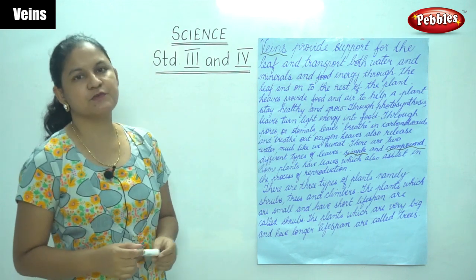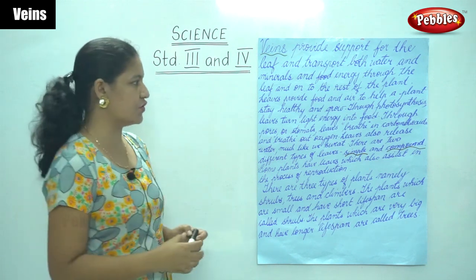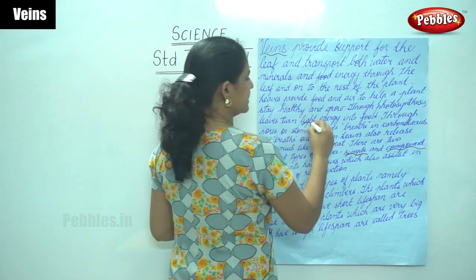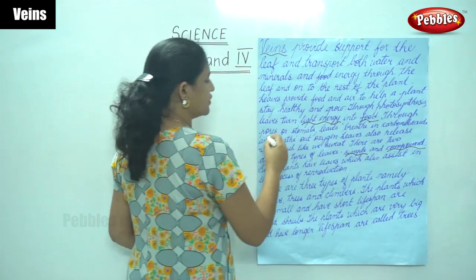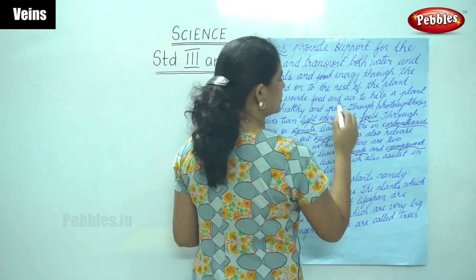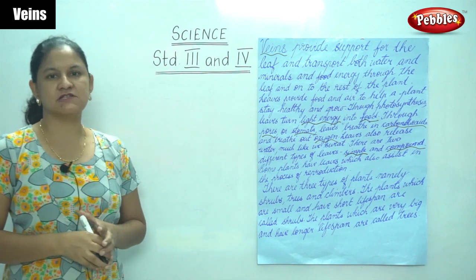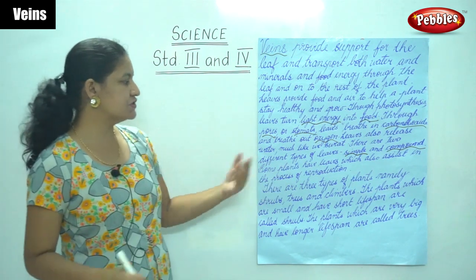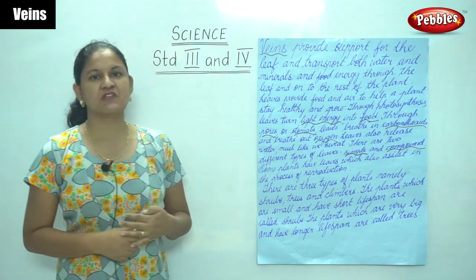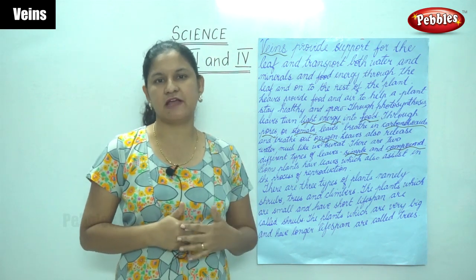In summary, leaves provide food and air for plants to remain healthy and grow. Through photosynthesis, leaves turn light energy into food. Through pores or stomata, leaves breathe in carbon dioxide and breathe out oxygen. Leaves also release water. There are two types of leaves: simple and compound. In some plants, leaves also help in reproduction.